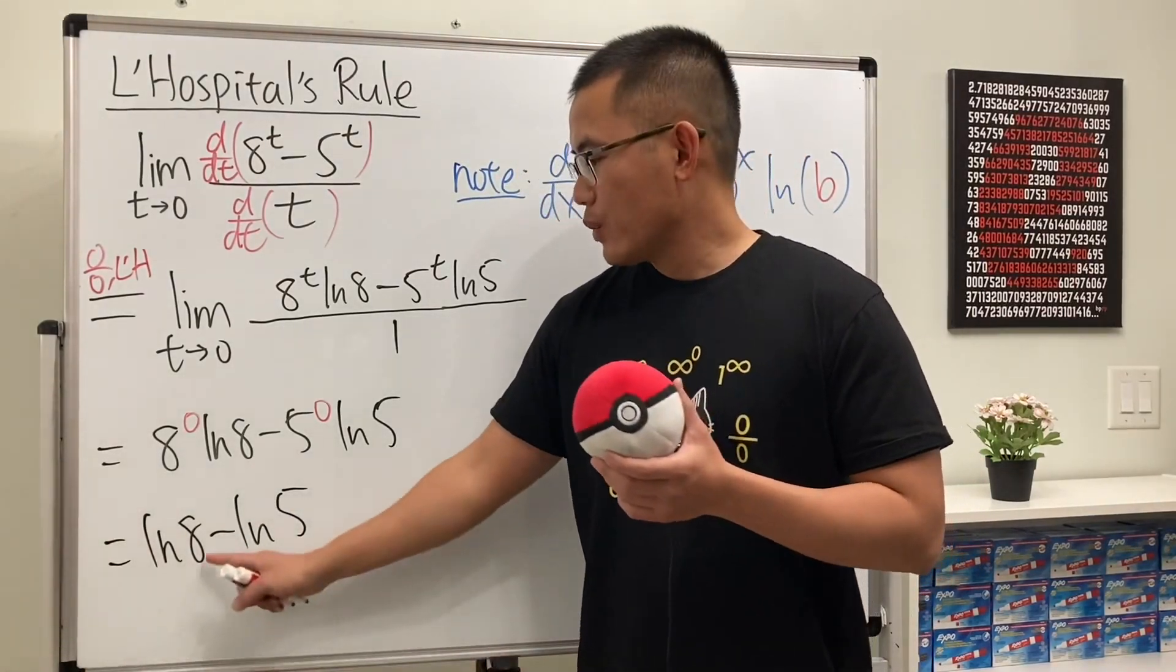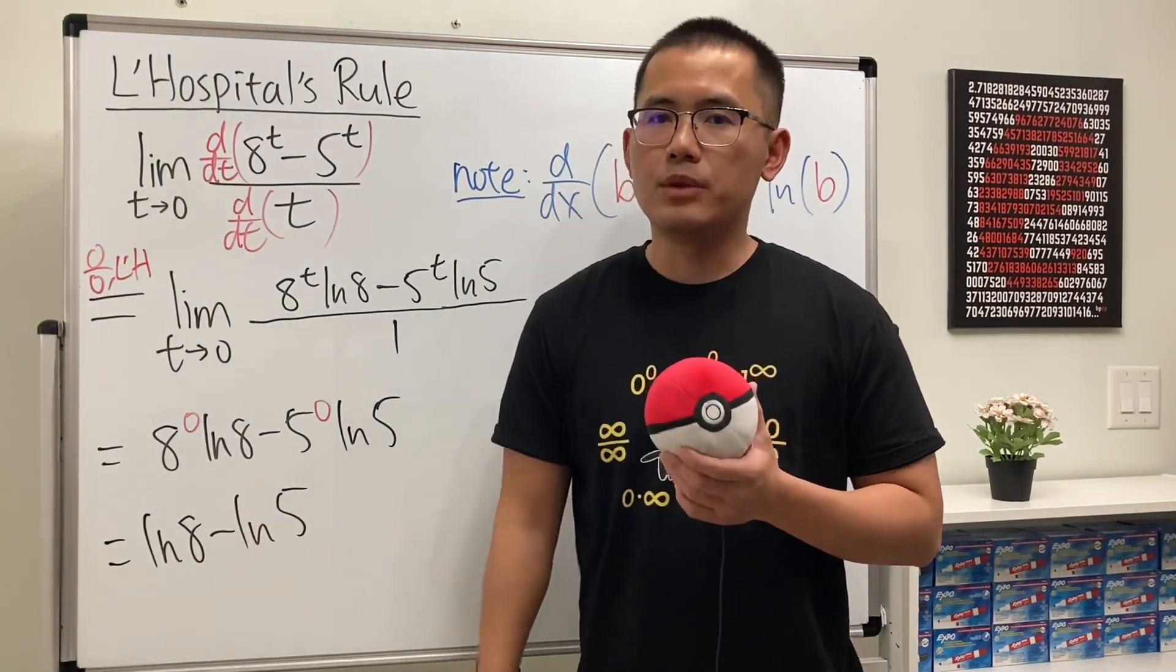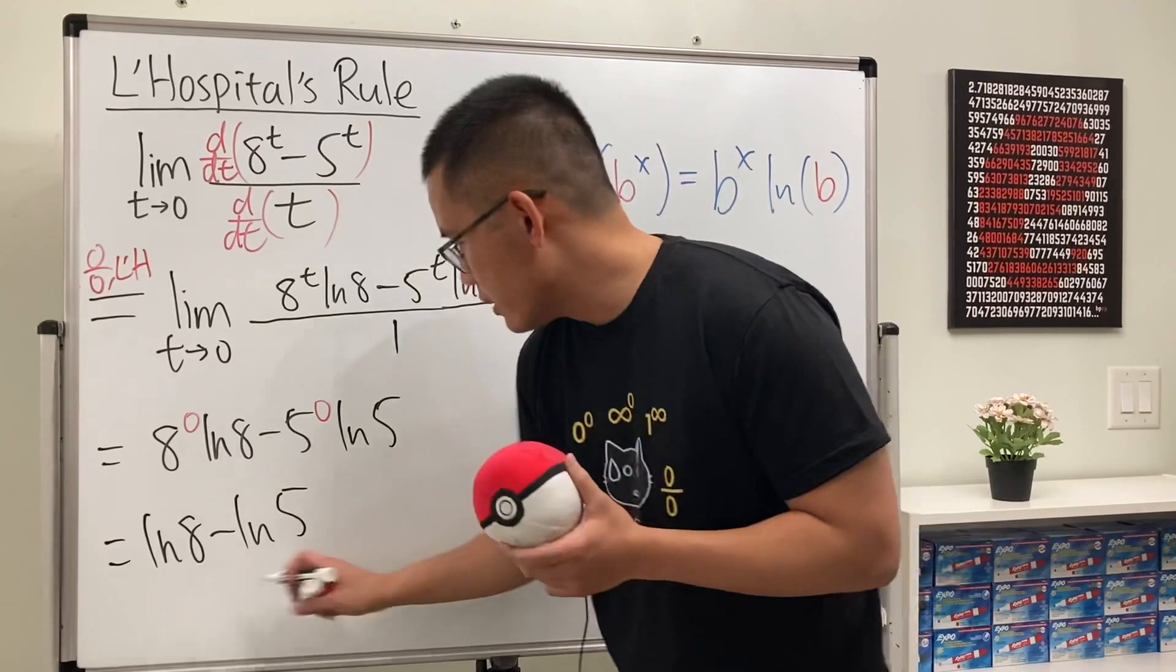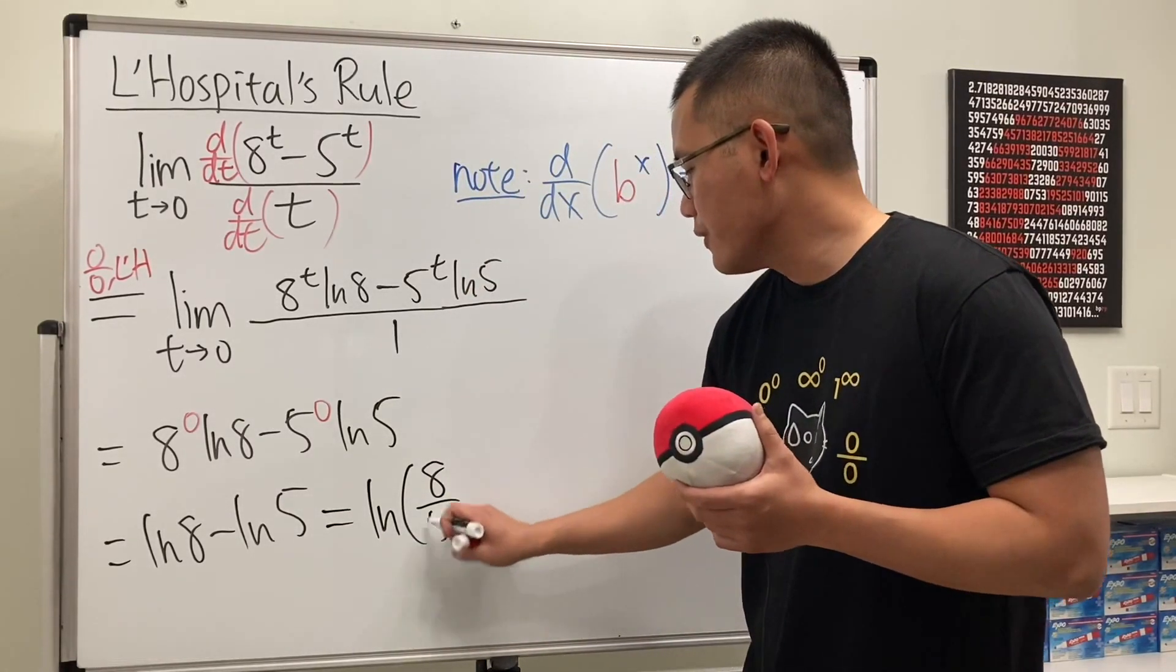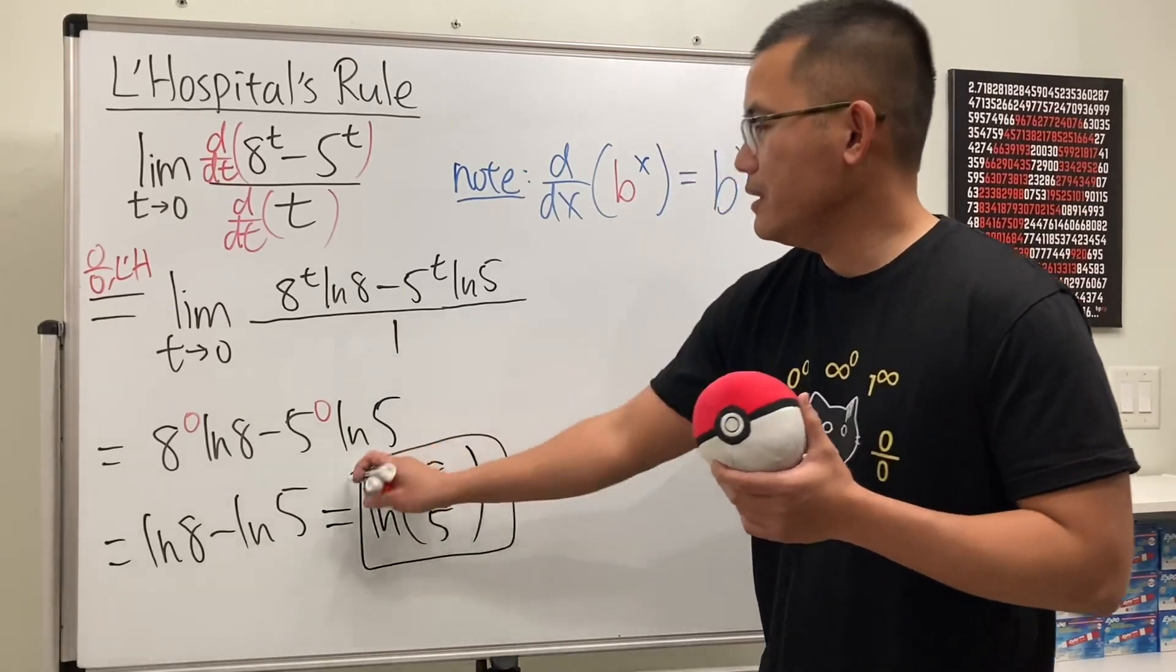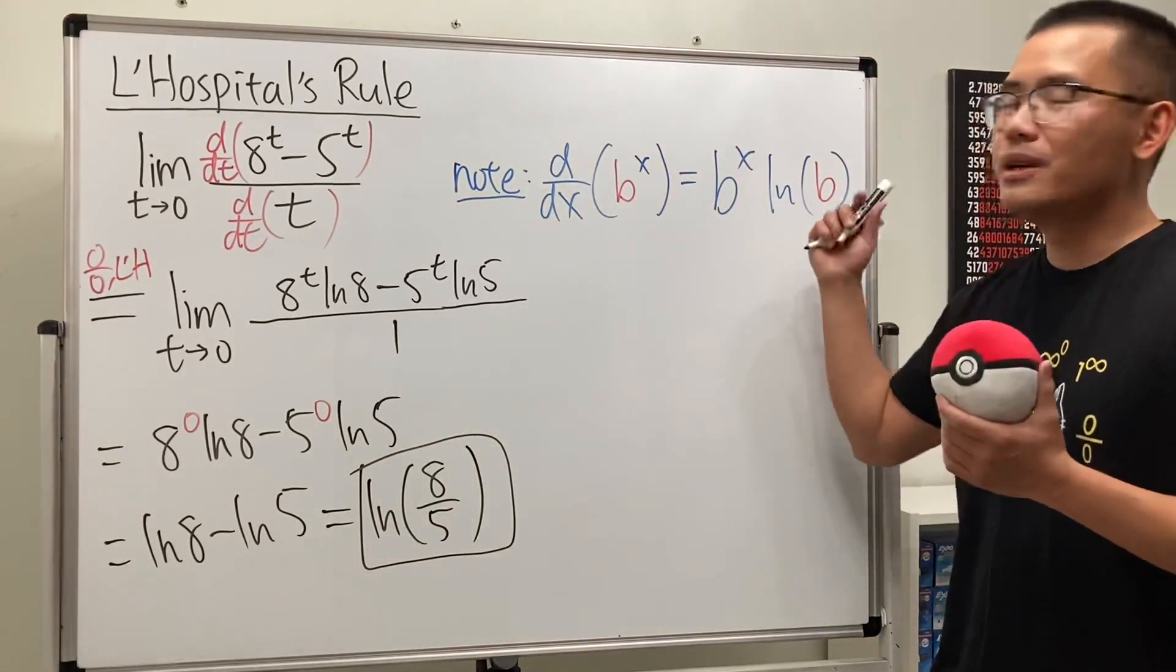And in fact, when we subtract two lns, we can put the insides together and make them into a division. So this right here, we can write it as ln(8/5). And that will be the answer. And as I said, this is the hardest part of the question. So remember your derivatives.